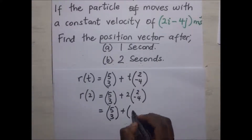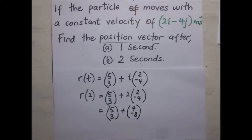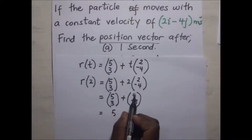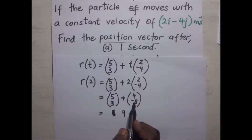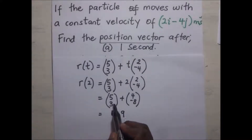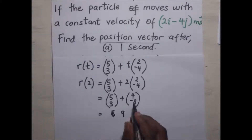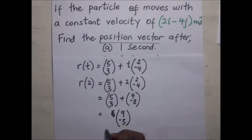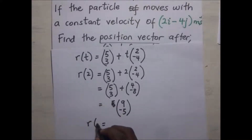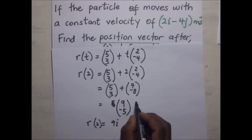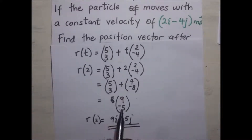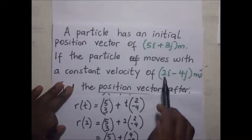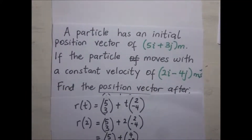This gives us [5, 3] plus: 2 times 2 is 4, and 2 times negative 4 is negative 8. So we get [5, 3] plus [4, -8]. Then 5 plus 4 is 9, and 3 plus negative 8 — which is the same as 3 minus 8 — gives us negative 5. So the position vector after 2 seconds is 9i minus 5j. We convert from column form to ij notation because the vectors given in the question are in ij notation, so our answers must also be in ij notation.